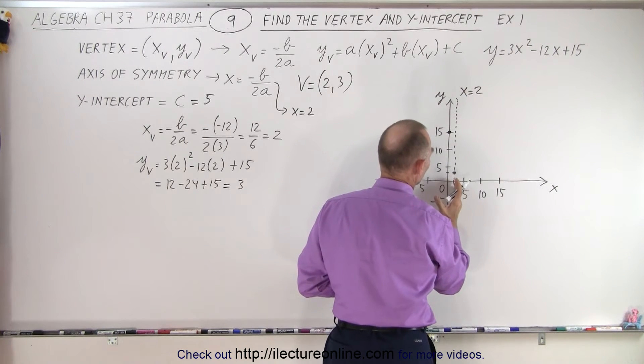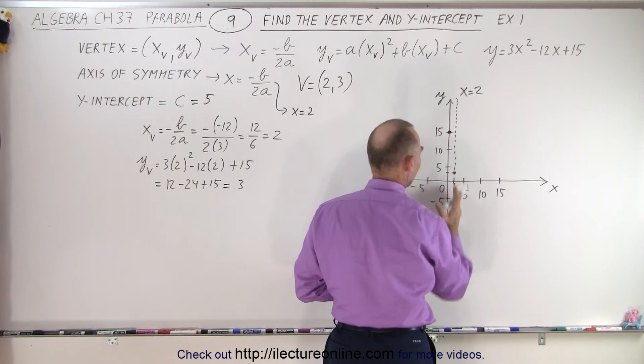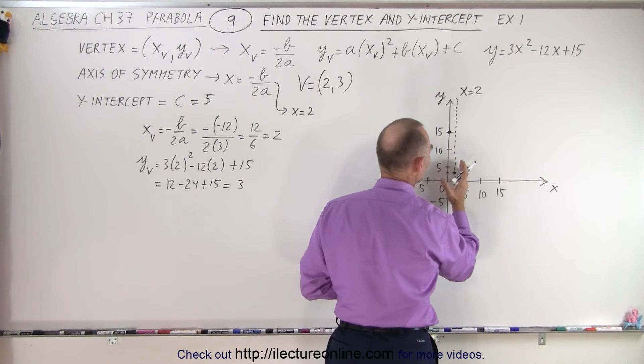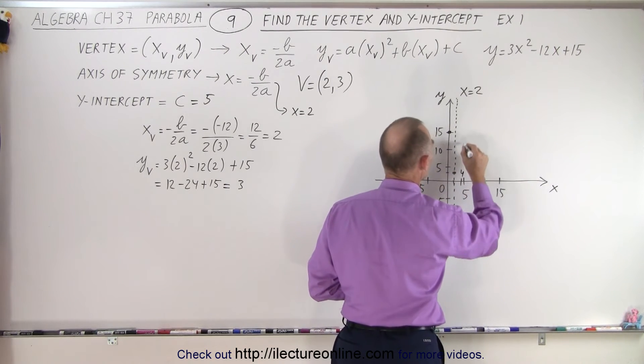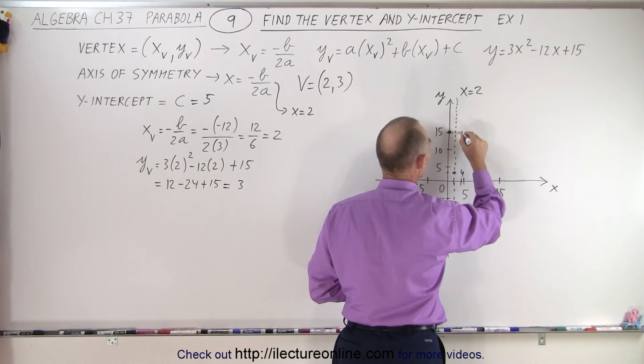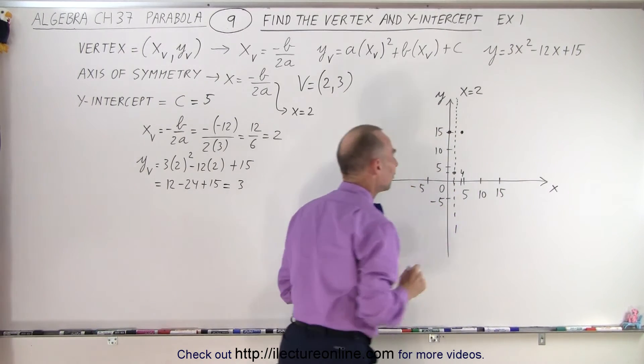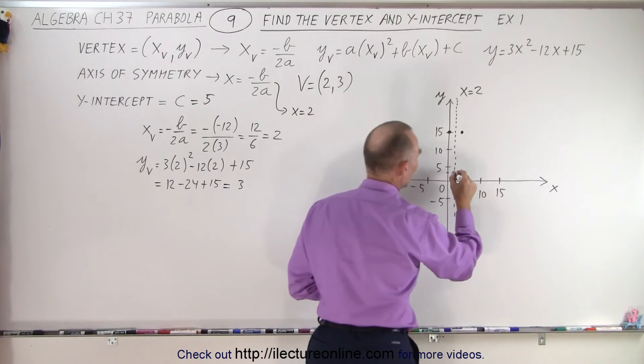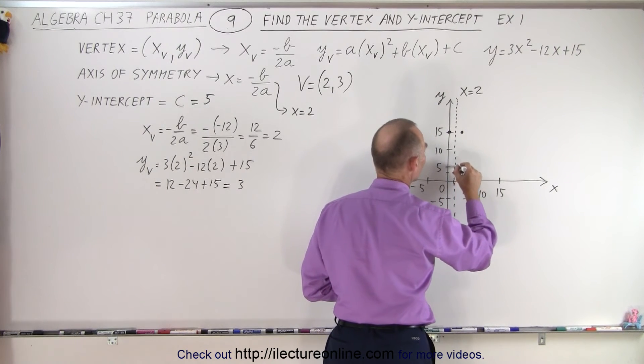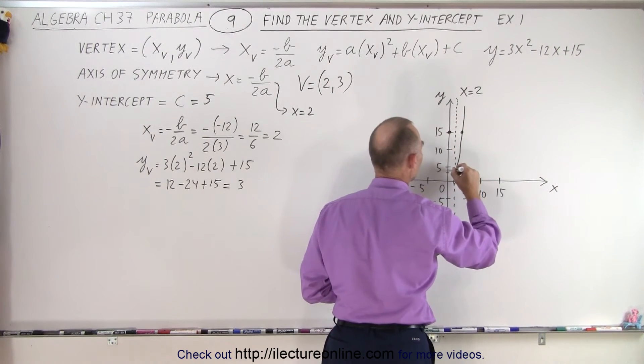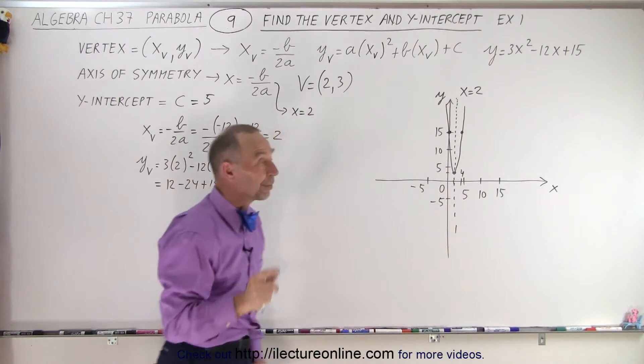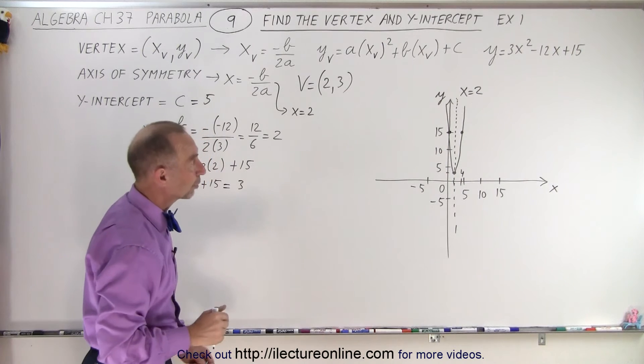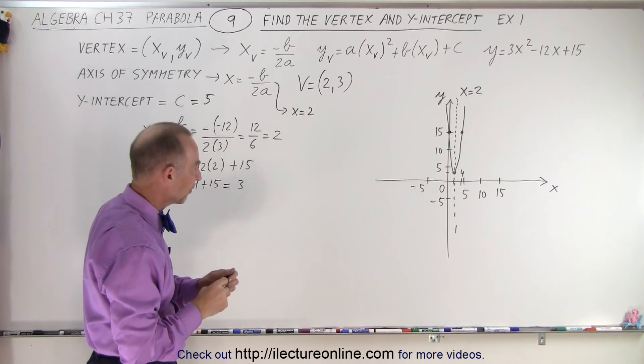Since we're 2 units to the left of our axis of symmetry, if we go 2 to the right where x = 4, we'll also have y = 15. So we can now begin to graph the curve. There is the parabola, represented by the equation y = 3x² - 12x + 15.